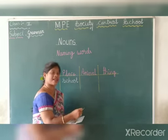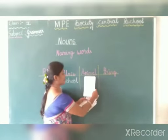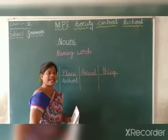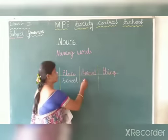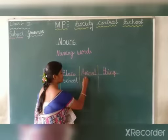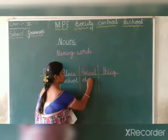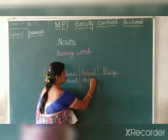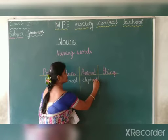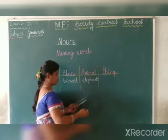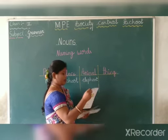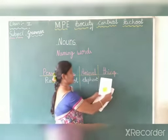Name of an animal — elephant. Name of a thing — log.